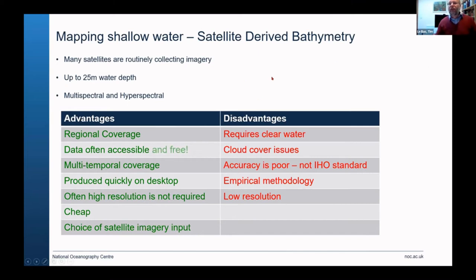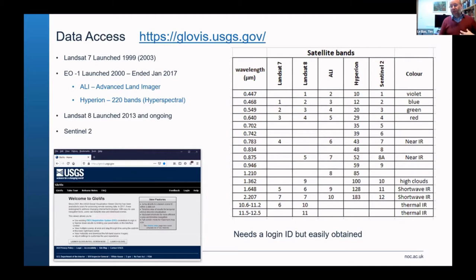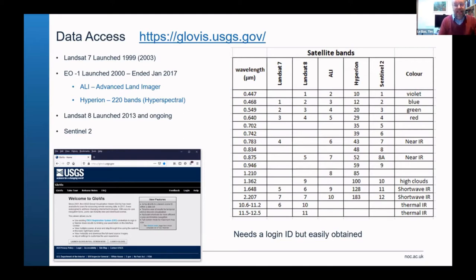Looking at how we get access to data — I've included the glovis.usgs.gov website as one option. There are lots of different datasets on there: Landsat 7 and 8, the Earth Observation Satellite with ALI and Hyperion. The Hyperion is quite useful, but unfortunately it finished in January 2017, so it's not up to date if you need current temporal accuracy.